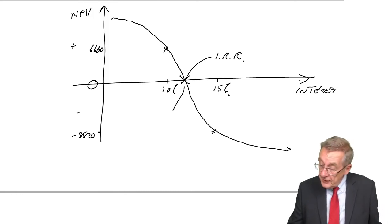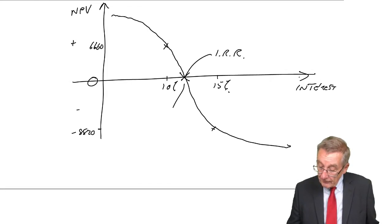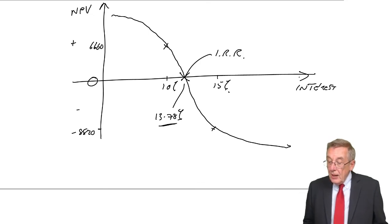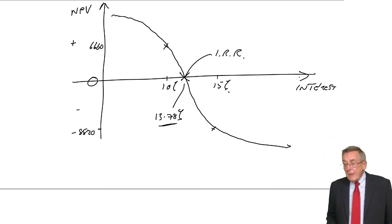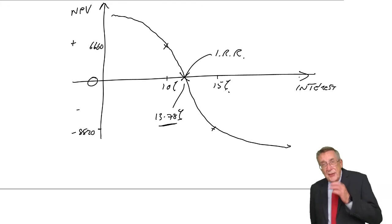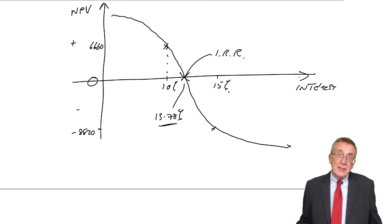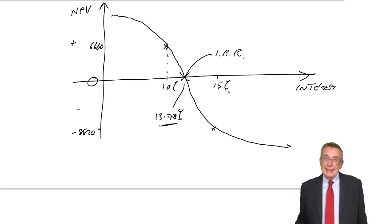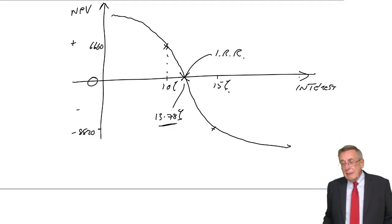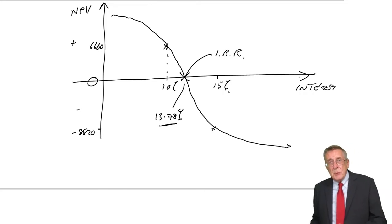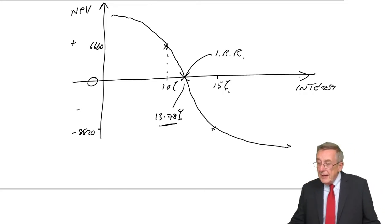We found out where the NPV is zero, the internal rate of return, 13.78%. What does it mean? Remember, what I said at the end of the last lecture, we think the interest rate is 10% and the NPV is positive. We accept. But we could be wrong. The interest rate may be 11%, it may be 12% and so on.